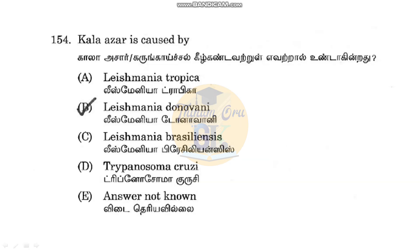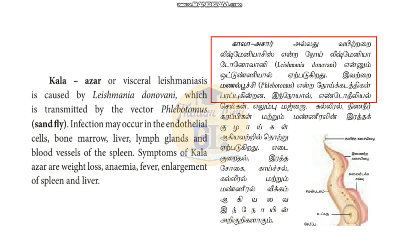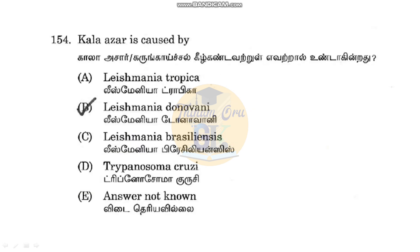For the next question: Kala Azar is caused by Leishmania donovani. The causative organism for Kala Azar is Leishmania donovani. Also note that Trypanosoma cruzi causes Chagas disease.